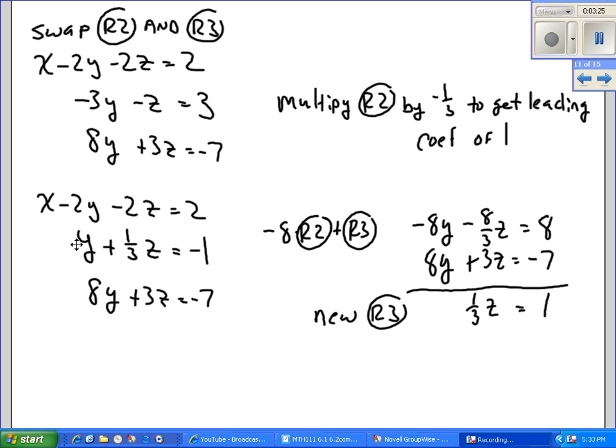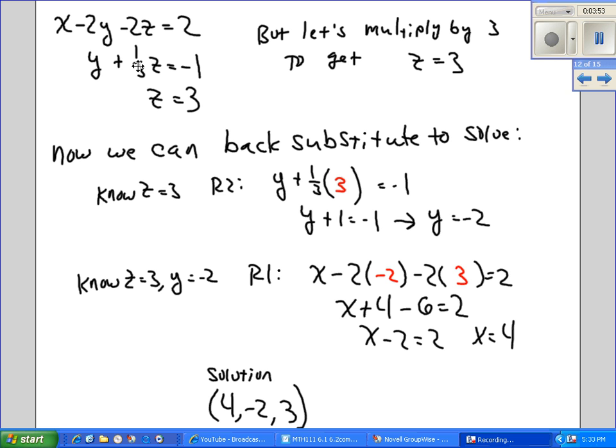And now that I've got that leading coefficient of 1 here, I'm going to multiply this equation temporarily by negative 8, add it to row 3, and get my new row 3. So negative 8 times row 2, here's my row 3. So the y's eliminate, and negative 7 is positive 1. And then I have to think a little harder here. I know 3 is 9 thirds, so negative 8 thirds plus 9 thirds gives me 1 third z for my new row 3. And then I went ahead and multiplied that by 3 to get z equals 3.